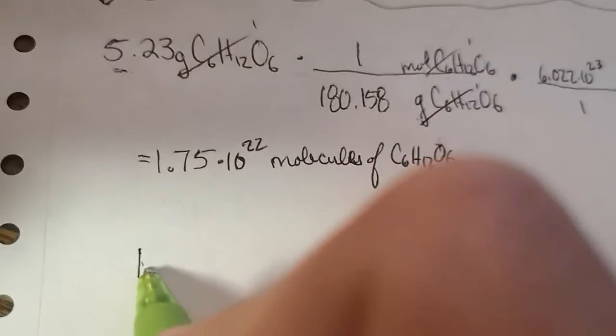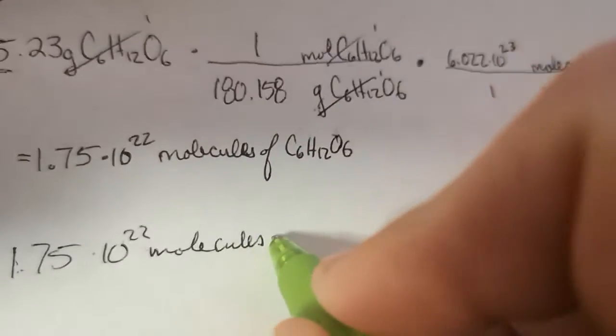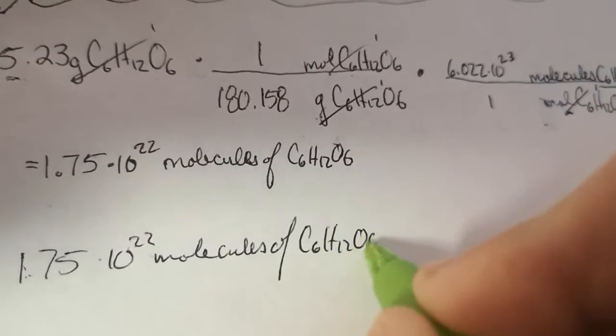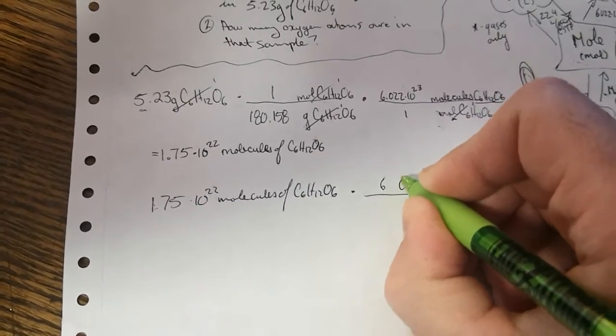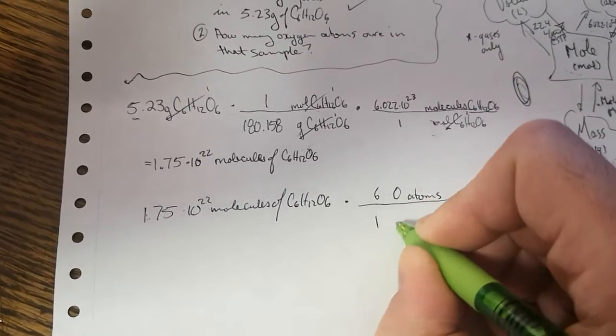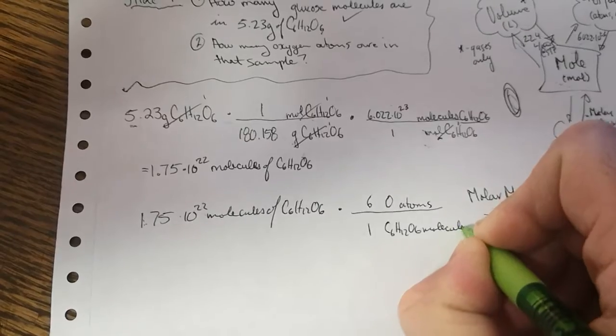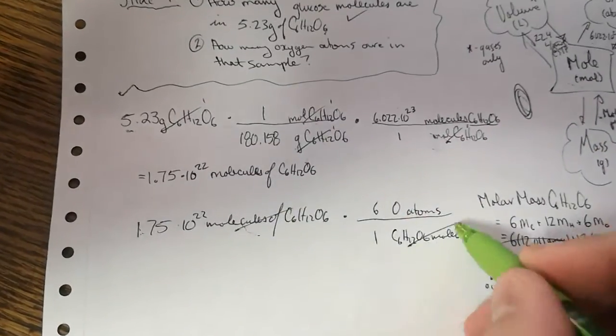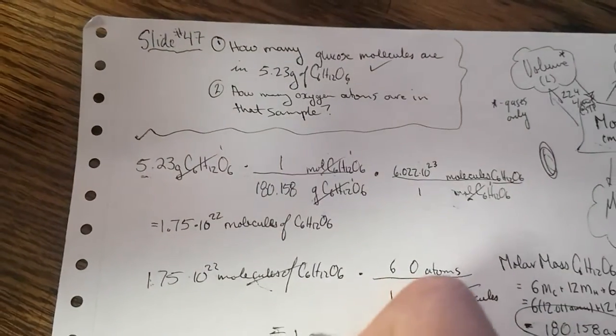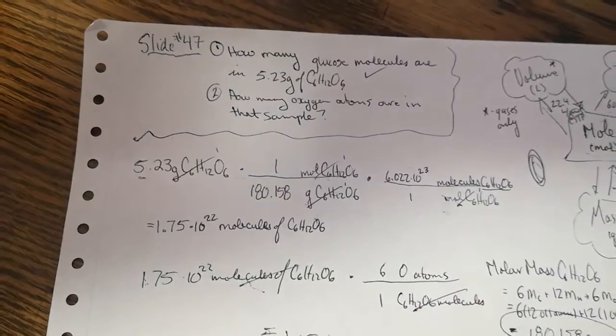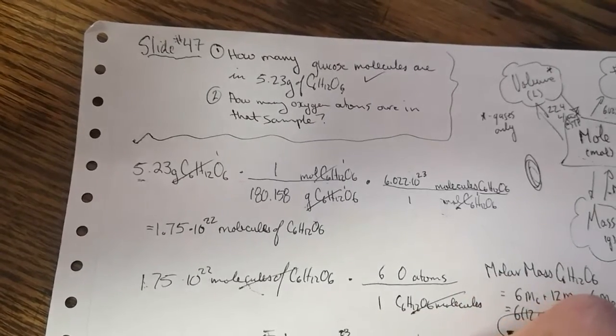So let's carry this answer down. 1.75 times 10 to the 22 molecules C6H12O6. We were asked, how many oxygen atoms? Well, there's 6 oxygen atoms for every 1 C6H12O6 molecule. 1.05 times 10 to the power of 23 oxygen atoms.